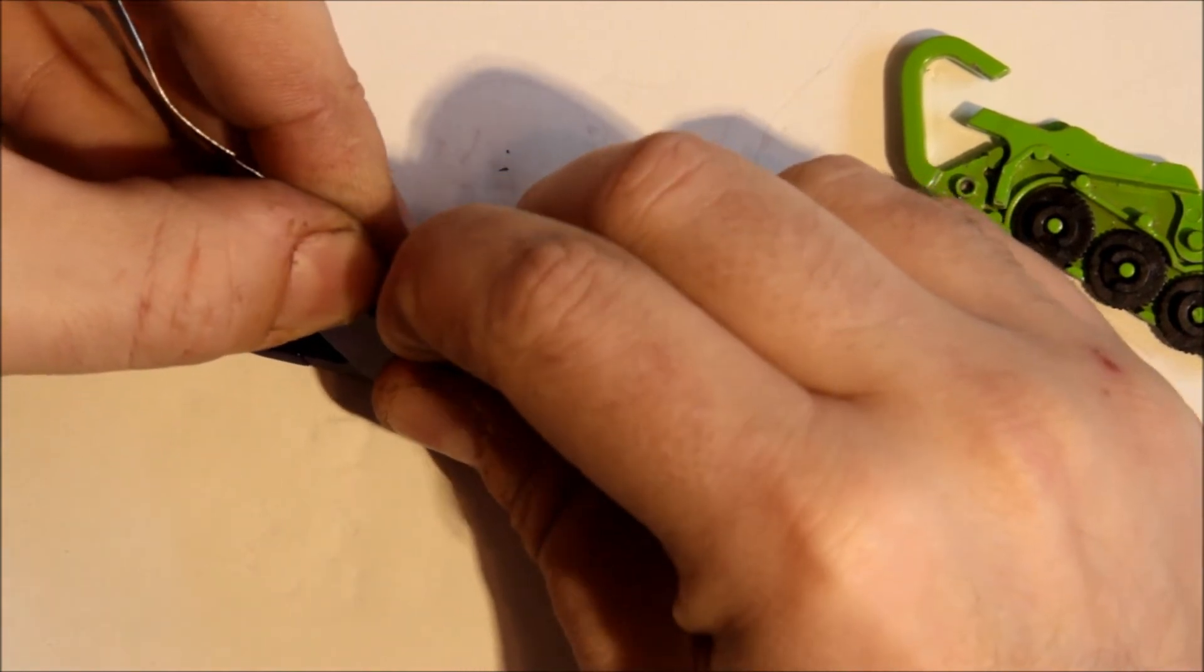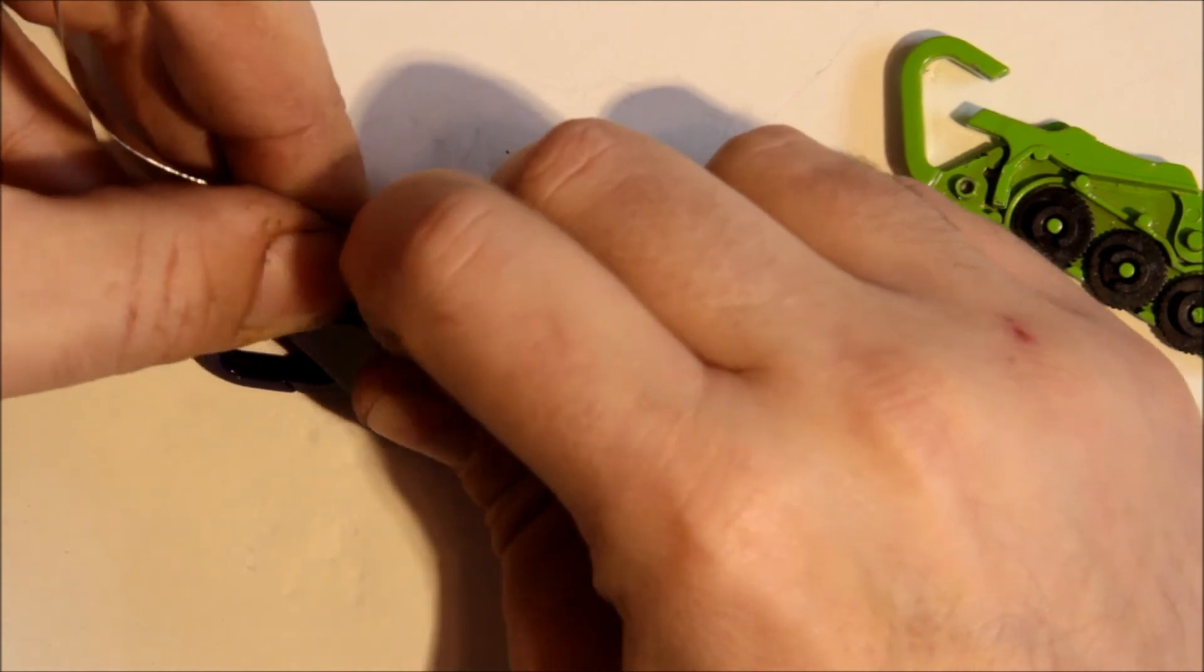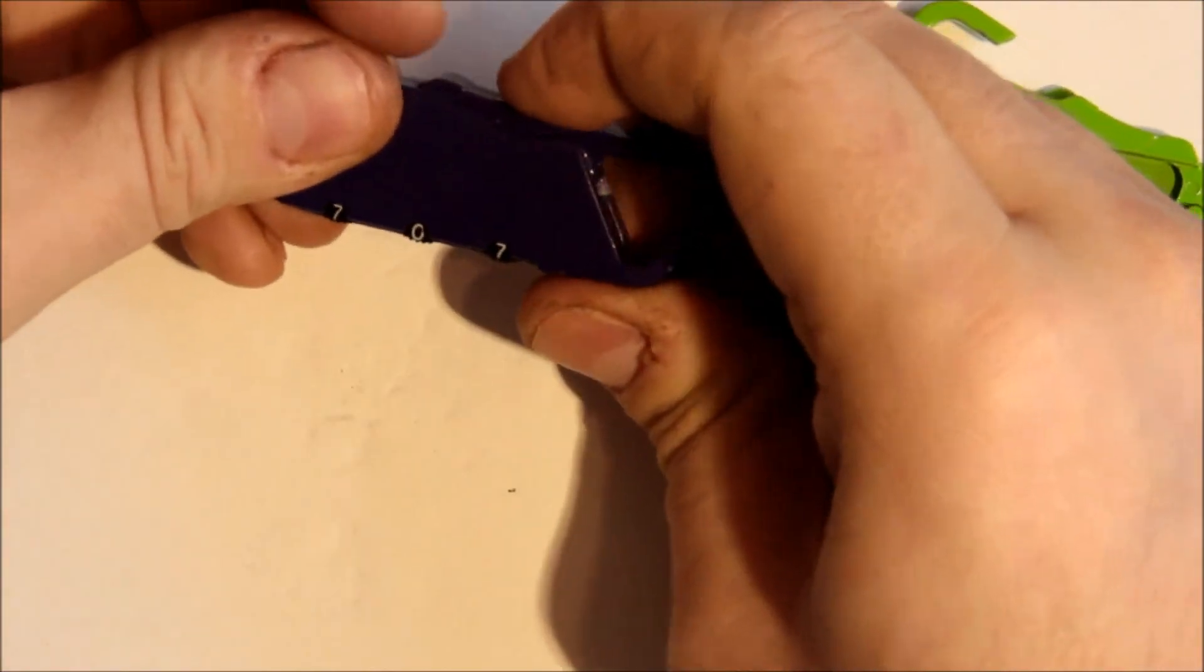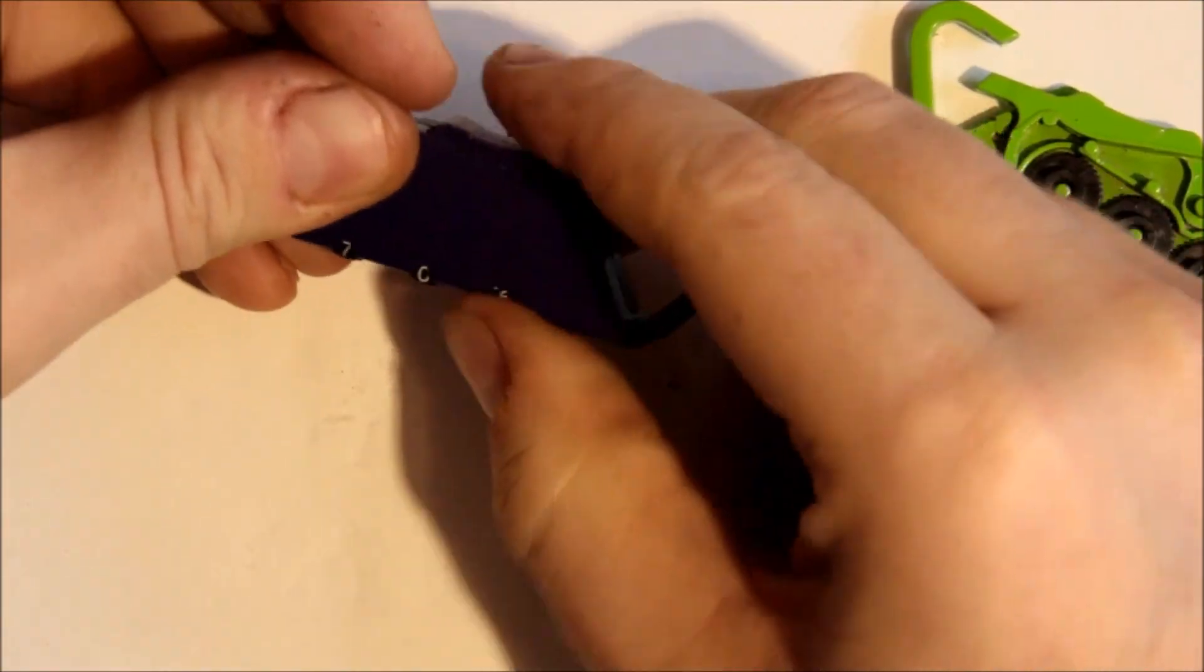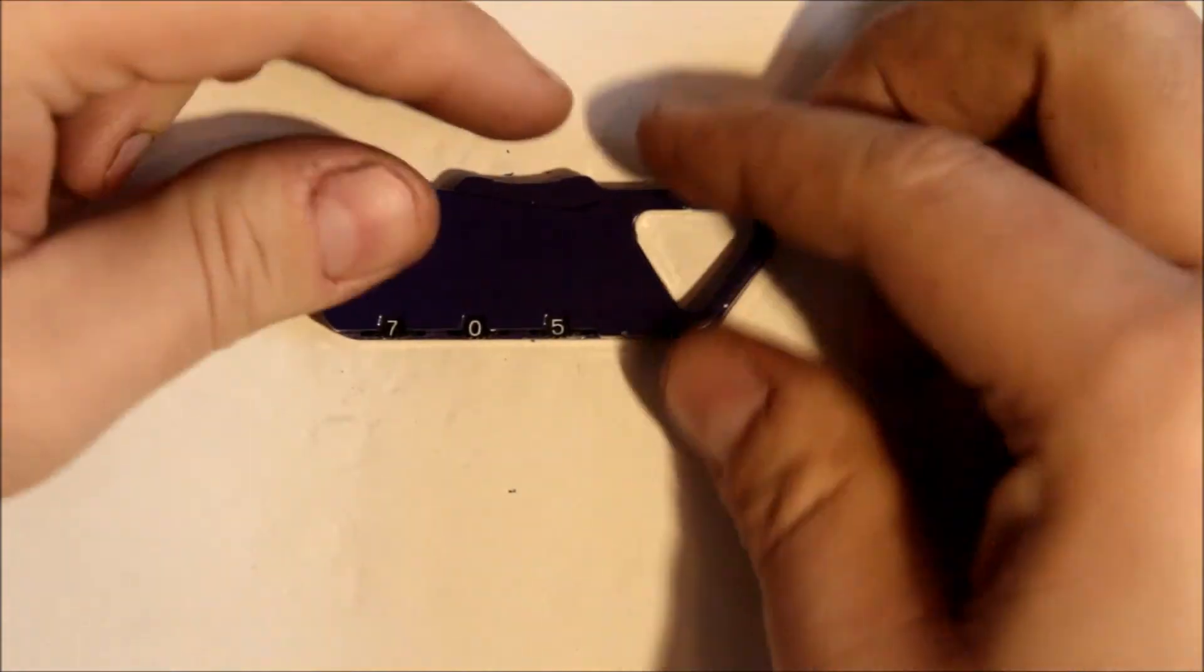So I've got that wedged in there pretty good. I'm going to advance this a couple of notches. Hopefully I'll get a couple movements out of it. So now it's at 707, not opening, 706, 705. So I got three positions out of it.